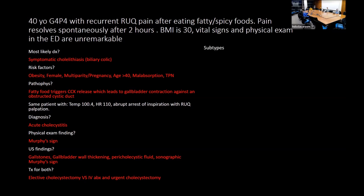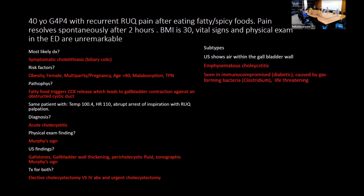Subtypes of cholecystitis: if ultrasound shows air within the gallbladder wall, that's emphysematous cholecystitis. It's seen in immunocompromised patients such as diabetics, caused by gas-forming bacteria, usually Clostridium. This is serious and can be life-threatening.